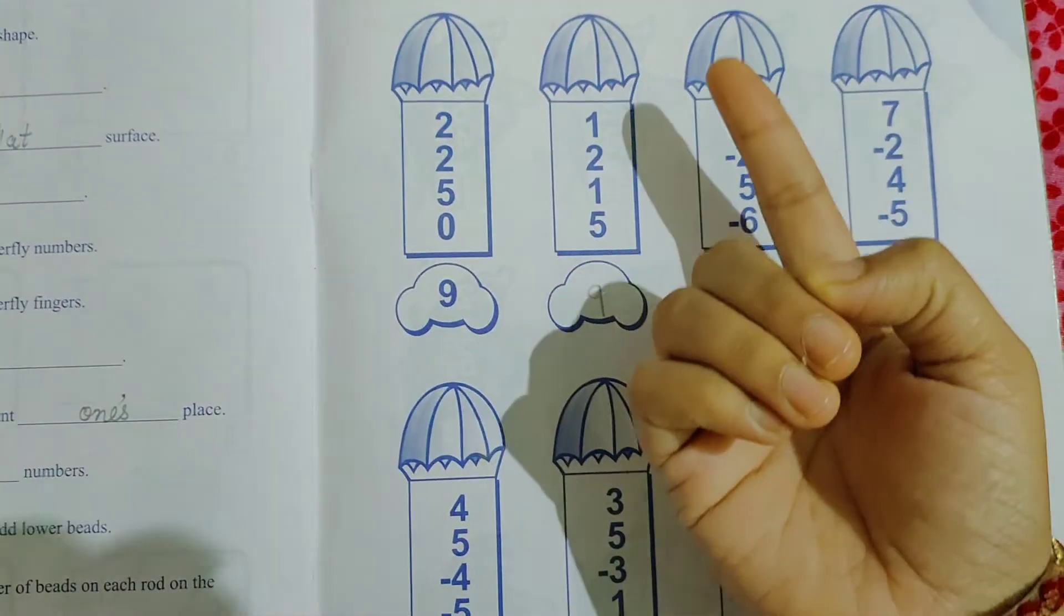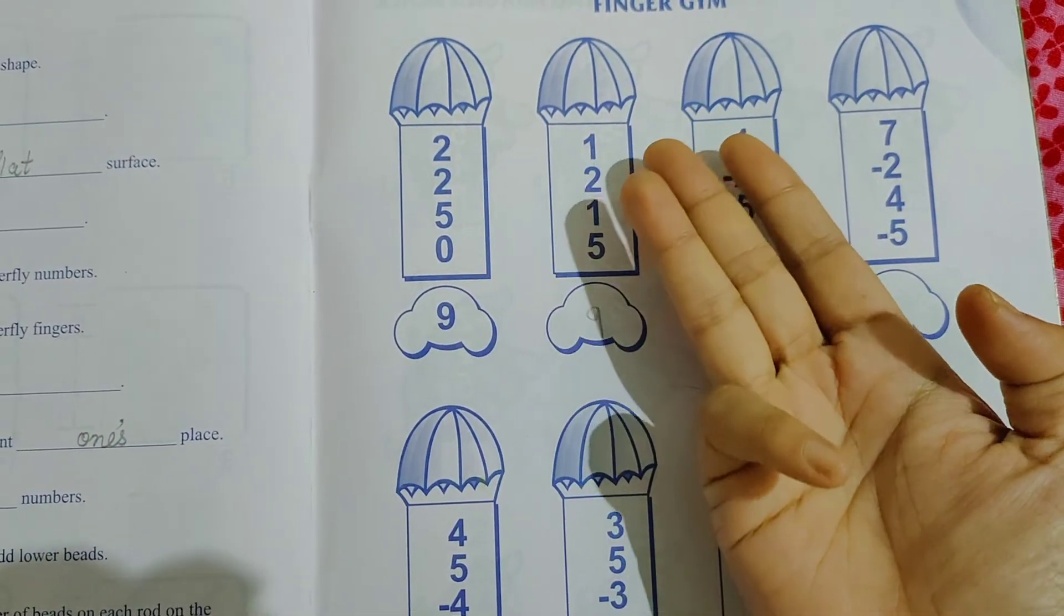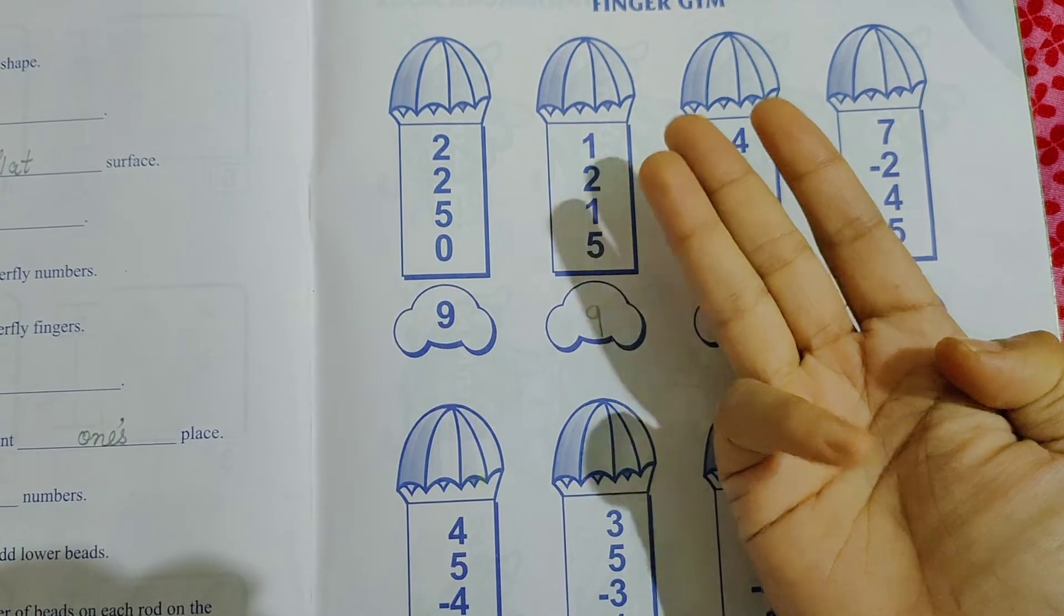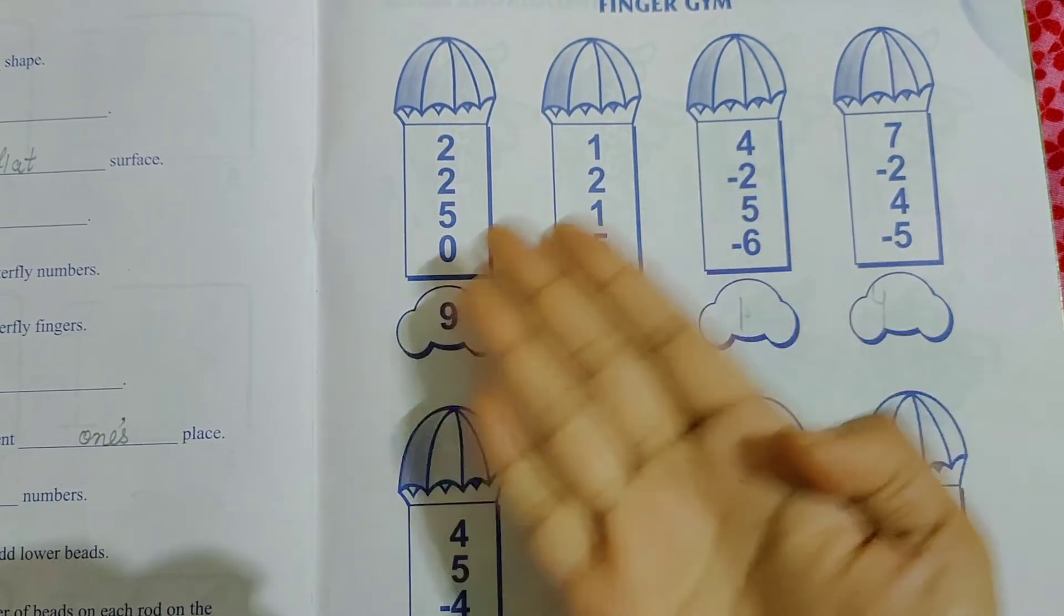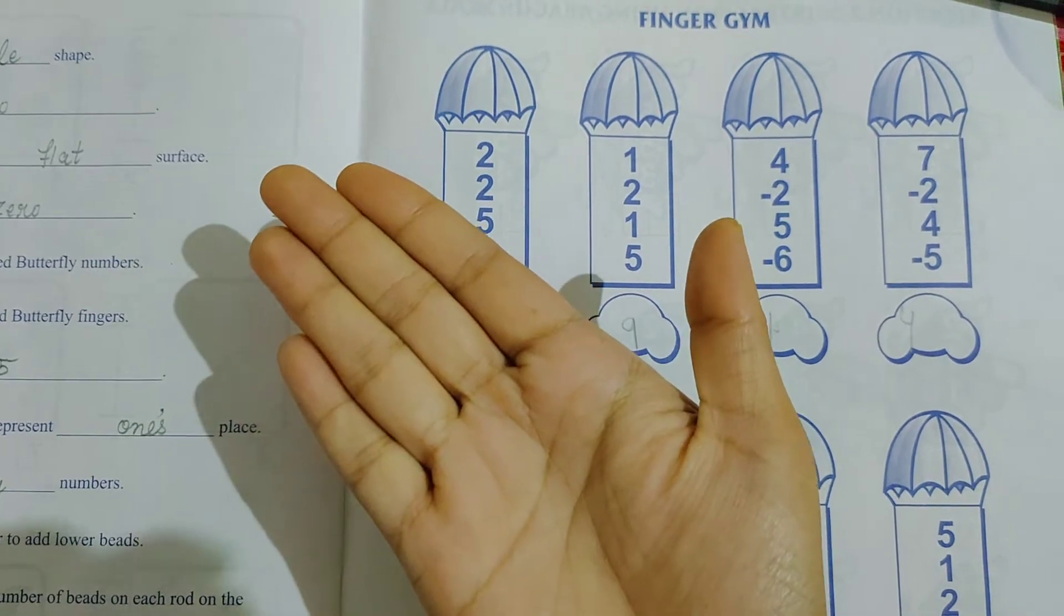Next question 1 plus 2 means 2 fingers you have to open. Again plus 1. Again 1 finger you have to open. Then 5. Then you have to open thumb. Answer is 9.